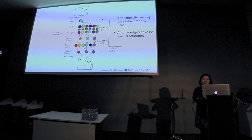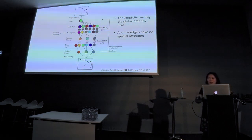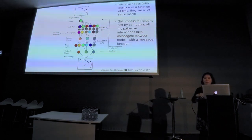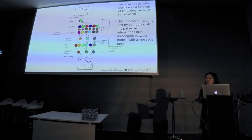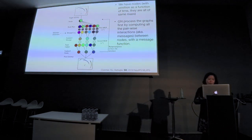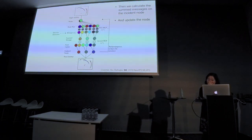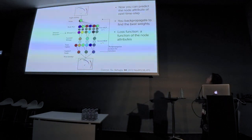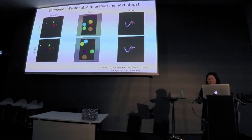For simplicity we'll skip the global property here — there's interesting work on Hamiltonian neural nets that would be worth applying. The edges have no special attributes. We have nodes with positions as a function of time; all masses are the same so we don't need to worry about that. The graph network processes the graphs by computing all pairwise interactions with the message function, then aggregates messages to each node, predicts the node attribute at the next time step, and backpropagates to find the best weights. The loss function is a function of node attributes like positions and velocities.